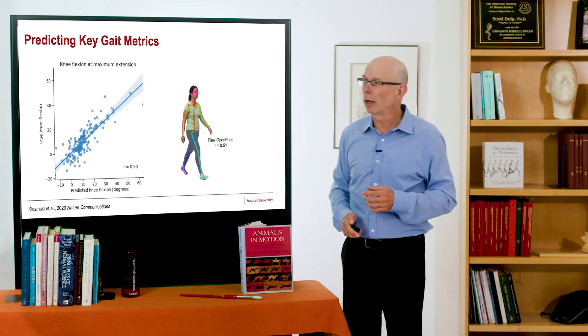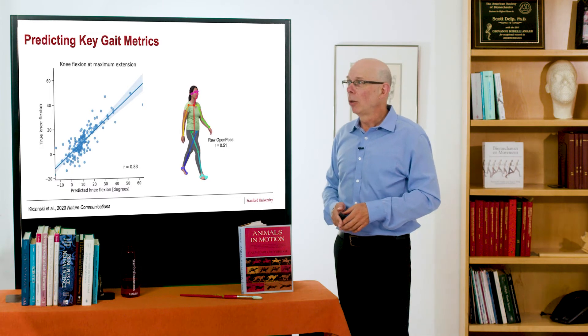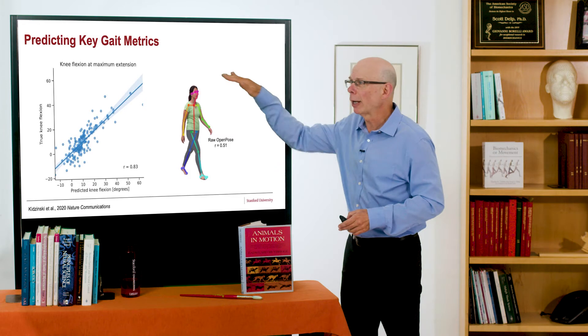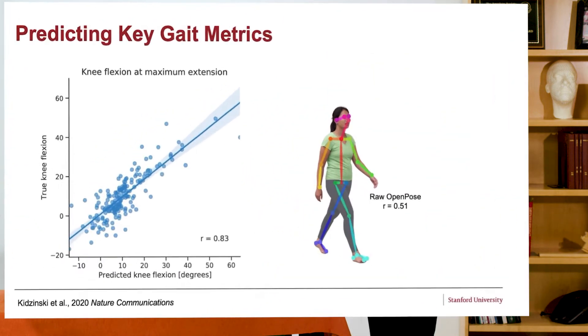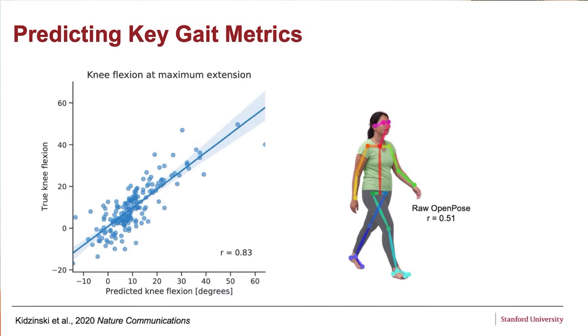So how did we do with the OpenPose and neural network? We did pretty well. So first, remember, we're trying to predict key gait metrics. And what I'm plotting here is the knee flexion angle at maximum knee extension. And we care about this because many children with cerebral palsy walk in a crouched gait pattern. So they're walking with flexed knees, and we want to know how flexed the knees are. So what I'm plotting here on the x-axis is the predicted knee flexion from the video and the neural net, and the true knee flexion angle that is from the 3D motion capture.